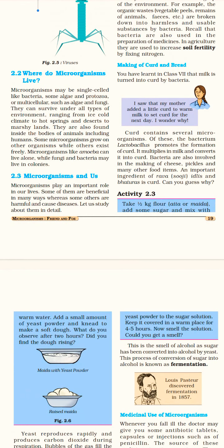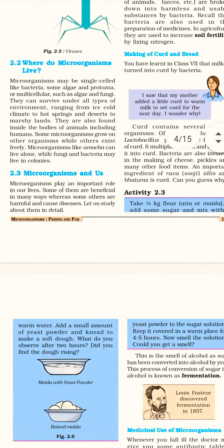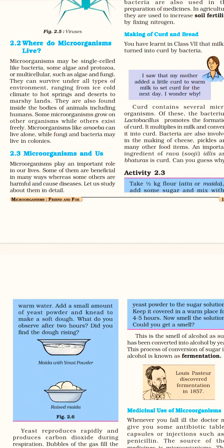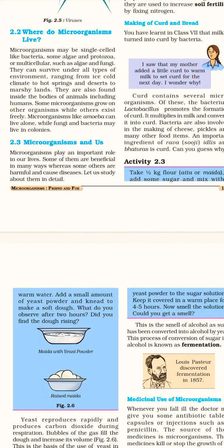Microorganisms can survive in every kind of condition — from ice cold areas to hot springs, even in hot lava, and from deserts (registan) to marshy areas (keechar). They are also found inside the bodies of animals including humans. Some microorganisms grow on other organisms while others exist freely.